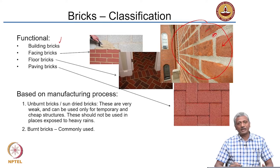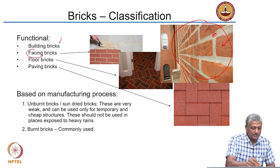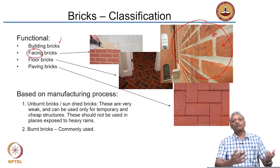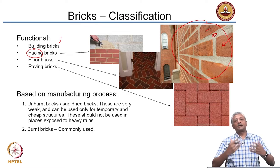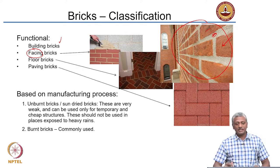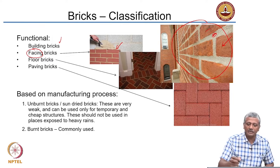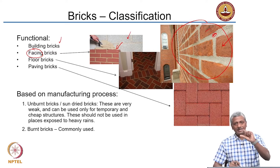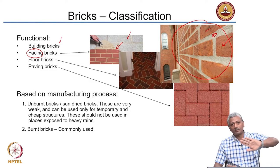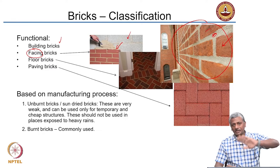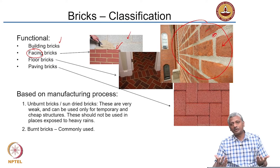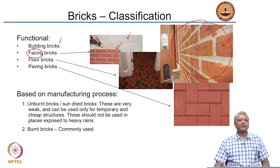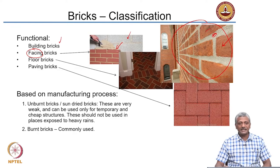Bricks can also be used for other functional purposes, such as facing purposes. Suppose you have a wall of concrete or any other material and you want to give it a nice aesthetic brick-like appearance in the front. You have special bricks called facing bricks. The background is a concrete block wall and you stick panels of facing bricks on top. Structurally, these facing bricks are not taking up any load — they simply provide the aesthetic brick-like appearance on the surface.